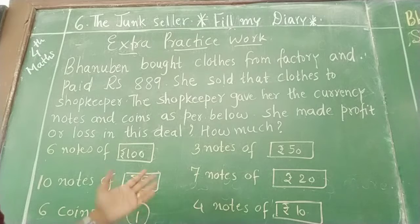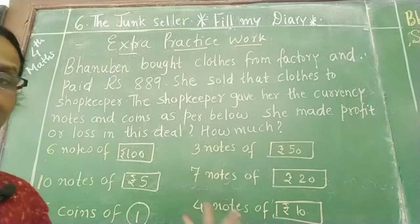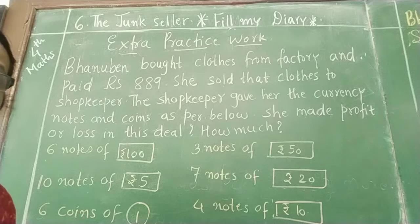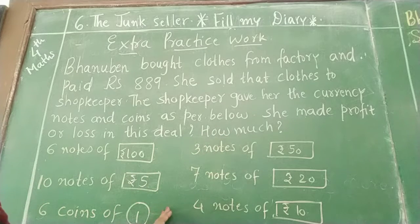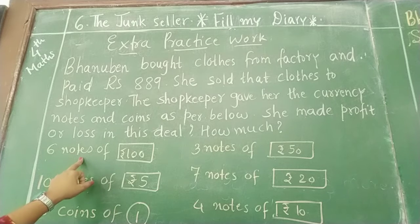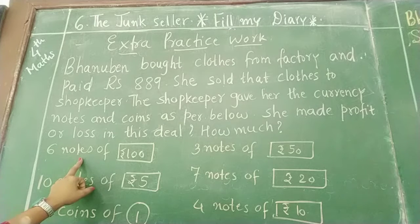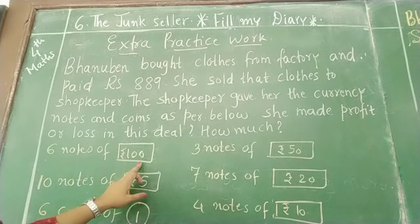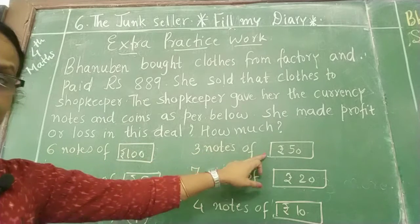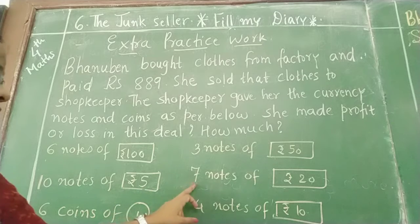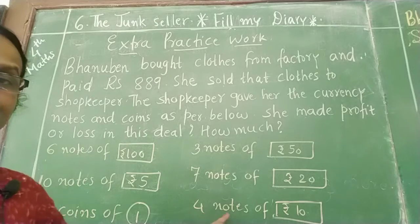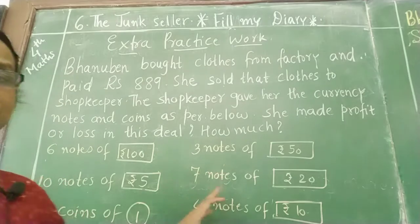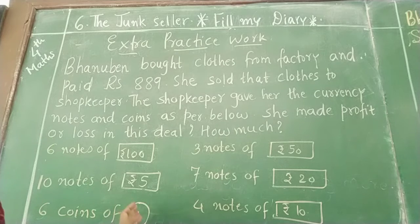We have to find out if she got more money or less money. If there is a loss, then less money; and if there is profit, then more money. What has the shopkeeper given to Banu Ben? 6 notes of 100, 3 notes of 50, 10 notes of 5, 7 notes of 20 rupees, 6 coins of 1 rupee, and 4 notes of 10 rupees. This is what the shopkeeper gave to Banu Ben.